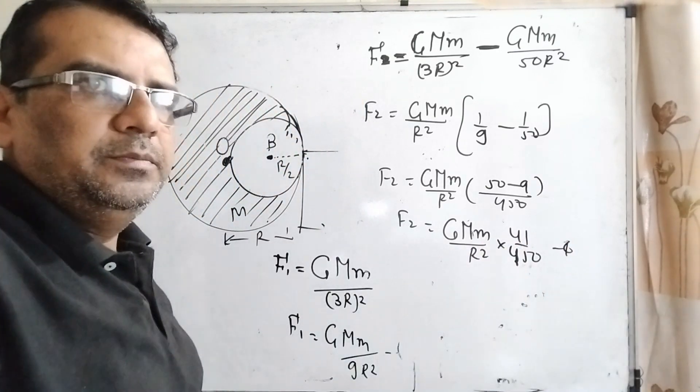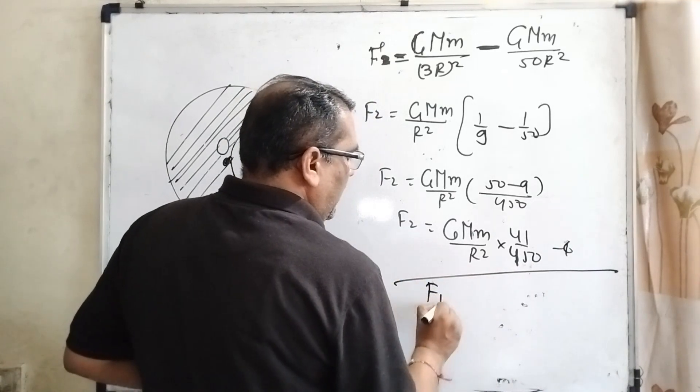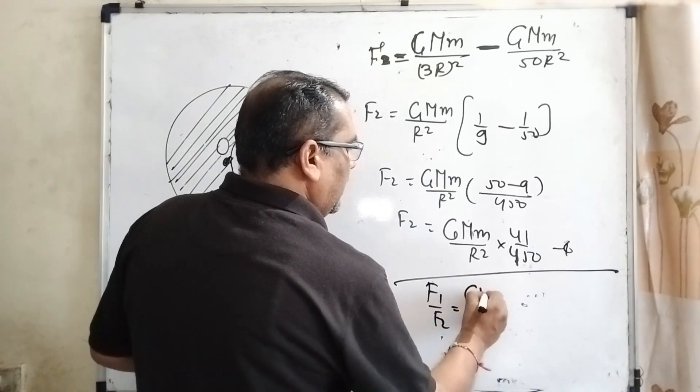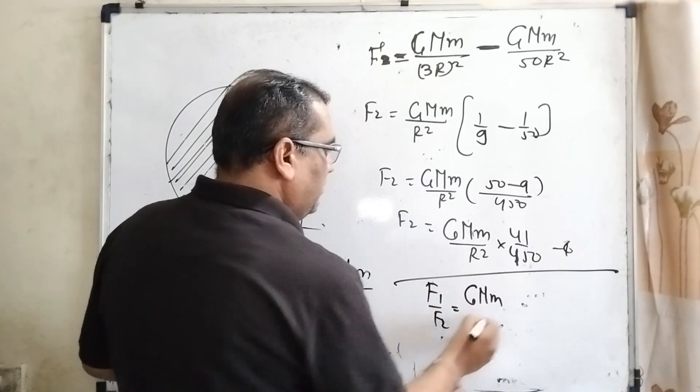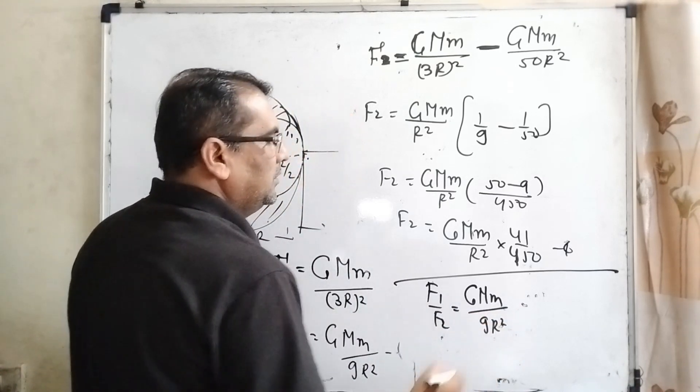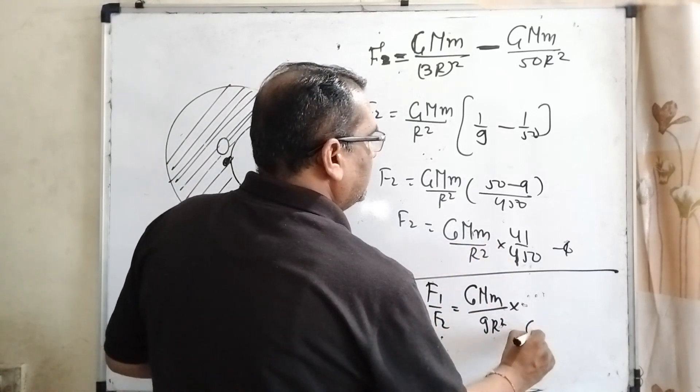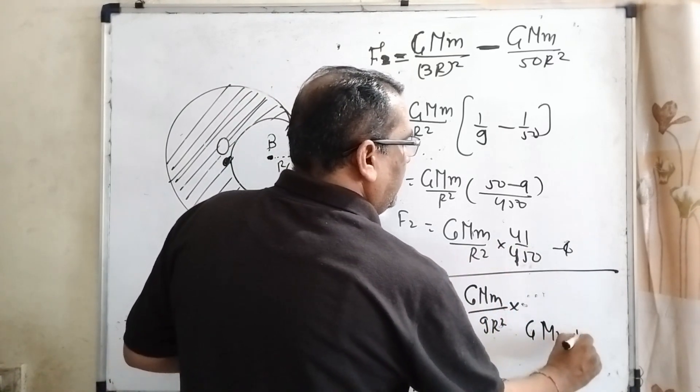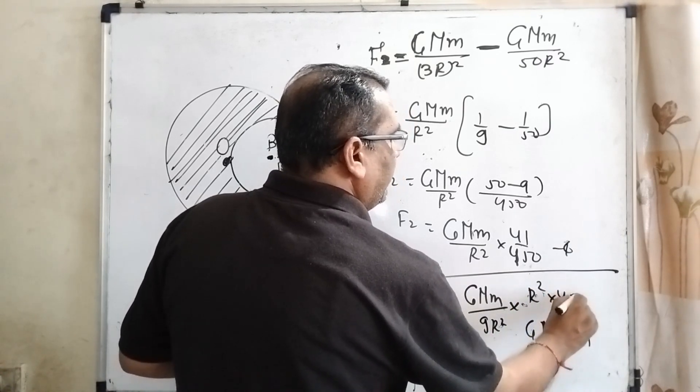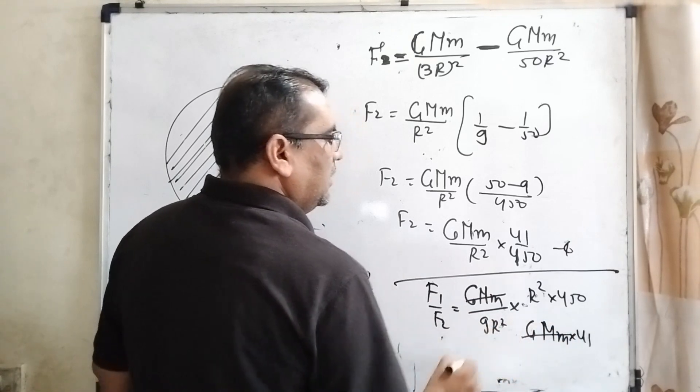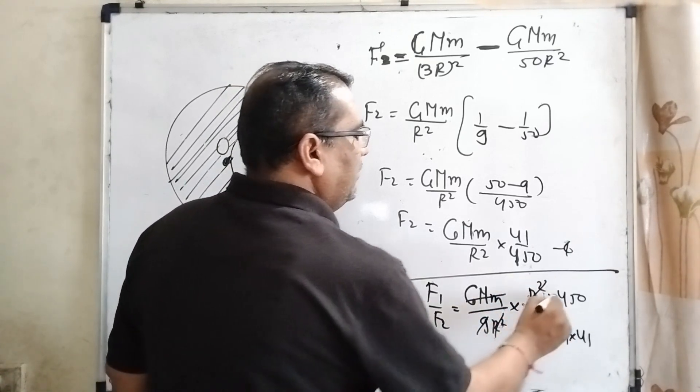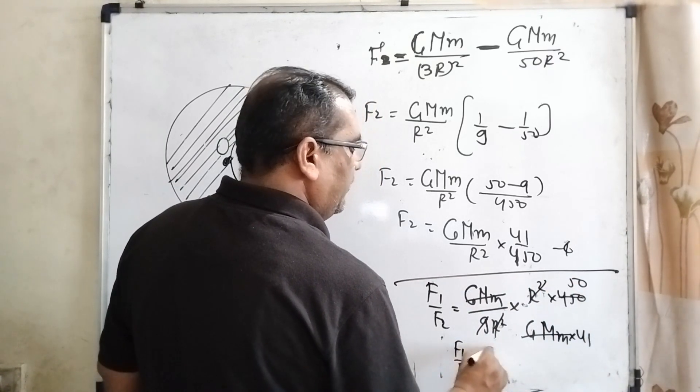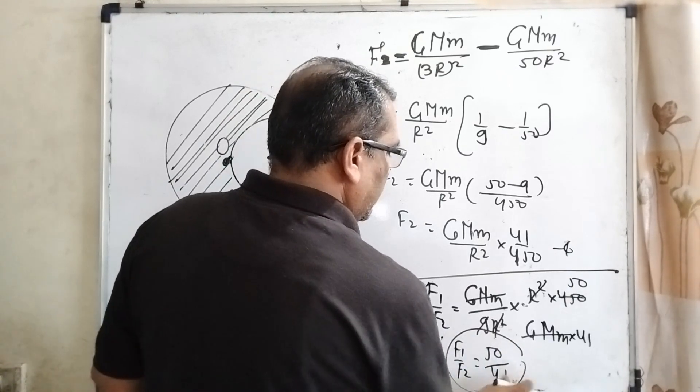And what we have to find out? To find out F1 by F2. We have already found out F1 G capital M small m upon 9 R square, and G M small m 41 R square and 450. G M m cancel out. R square cancel out. 9 times 50 is 450. So, F1 upon F2 equal to 50 by 41. This is our correct answer. I hope you understand this question.